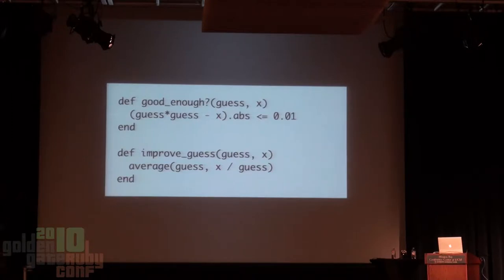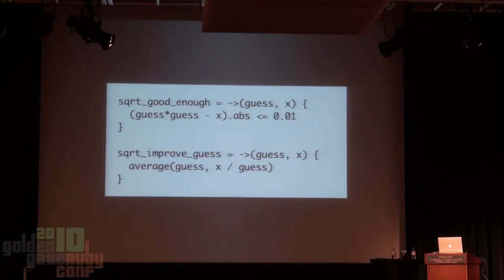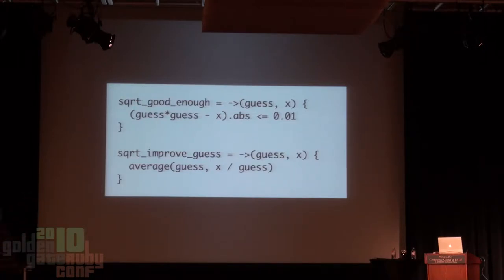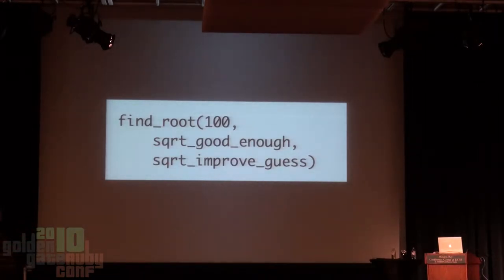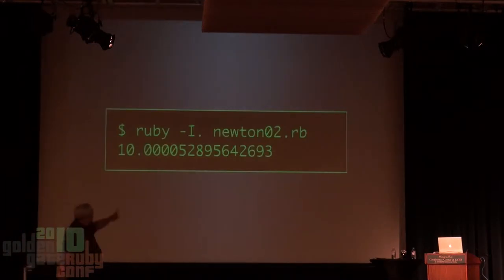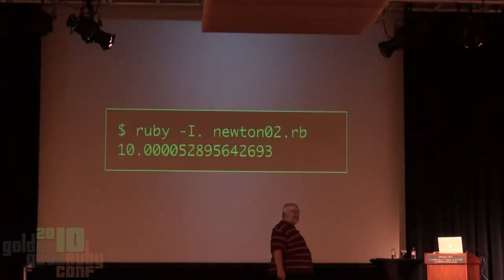To use find_root, good_enough and improve_guess instead of being methods go into becoming lambda objects. We're using the Ruby 1.9 stabby proc syntax, which we call stabby procs. This creates a procedure object. We assign the square root good_enough and square root improve_guess. Then we can call find_root with 100 and pass in the two methods we need to find square root. We can run this and it gives us the same exact answer as our previous code.